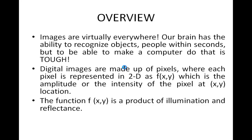Images — we know that they are virtually everywhere. Our brain has the ability to recognize objects and people within seconds, but to be able to make a computer do the similar thing is really tough.